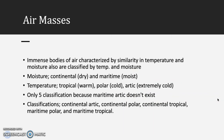Now let's talk about air masses. These are immense bodies of air characterized by similarity in temperature and moisture, and this is also how they are classified. Moisture can be classified as either continental, which is dry, or maritime, which is moist. Temperature will be classified as tropical or warm, polar cold, or arctic — extremely cold.